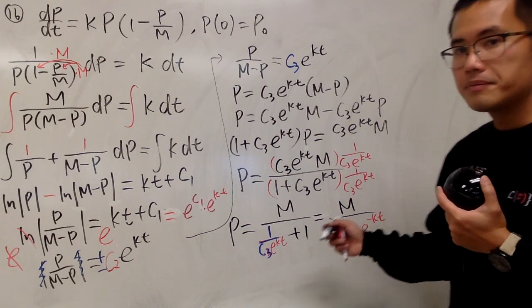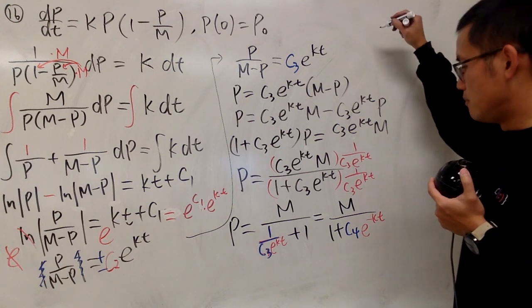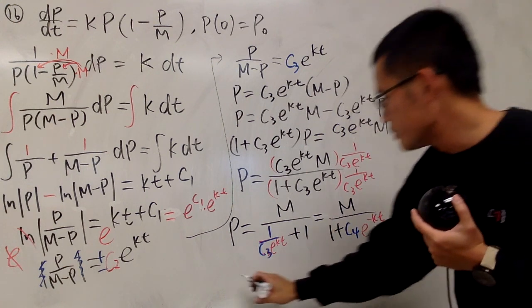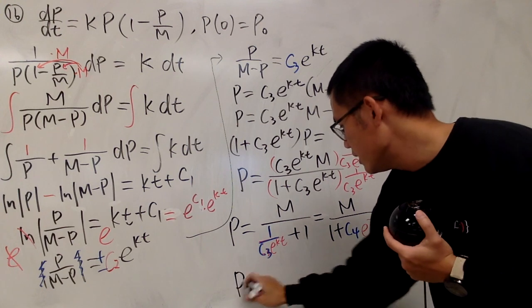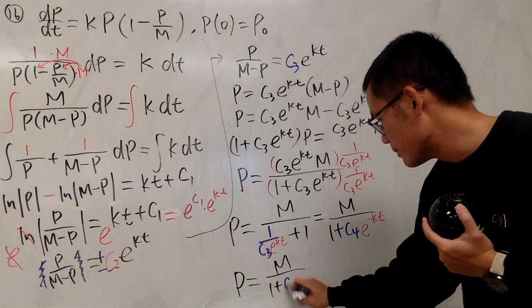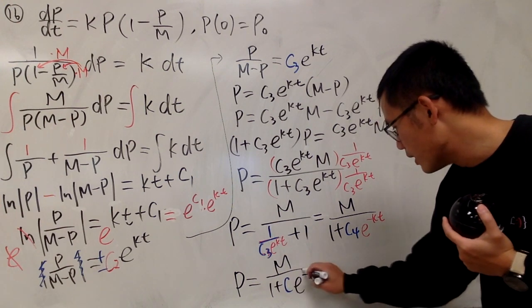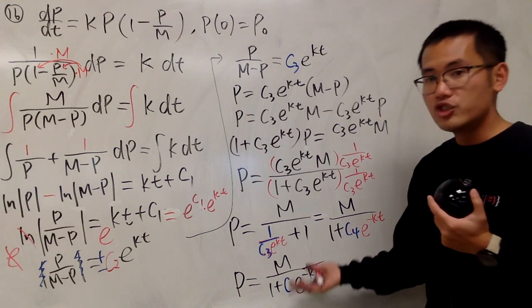The general solution is, let me write it down: p equals m over (1 + c e^(-kt)). I'll just put this as the legitimate c. All right, so this is the general solution.